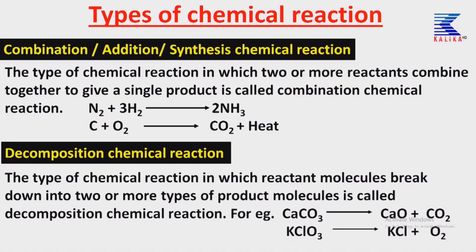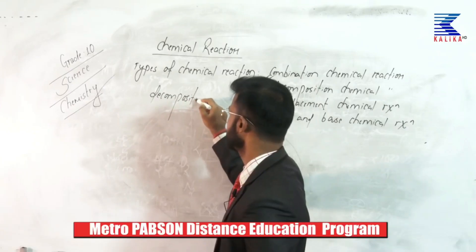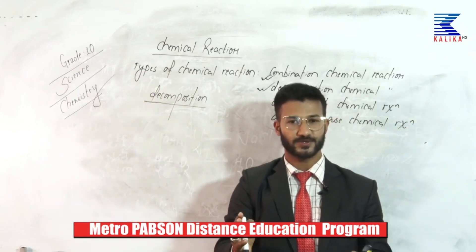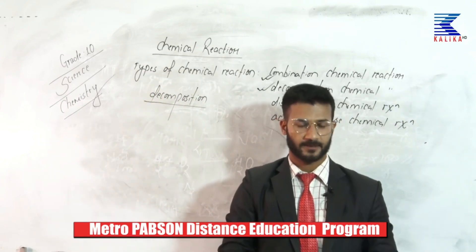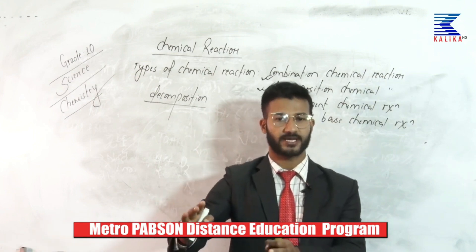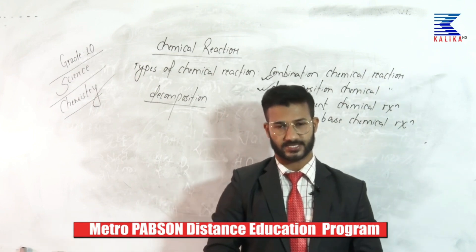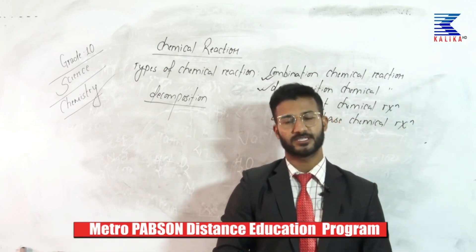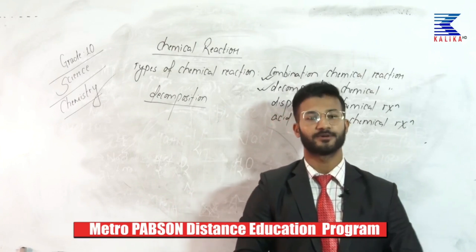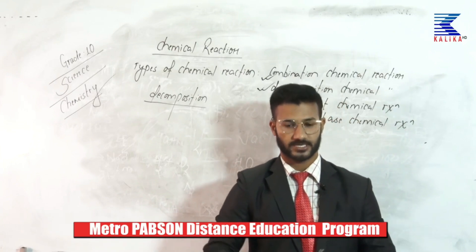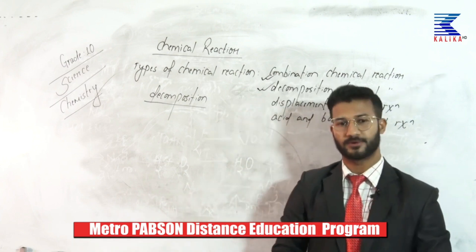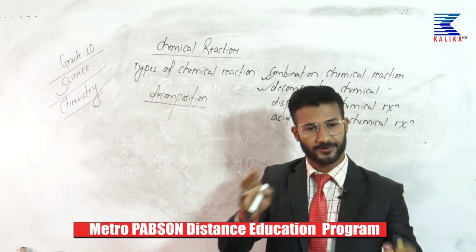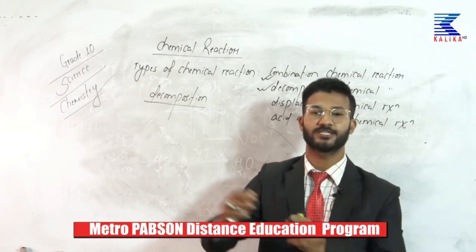Coming to the next type — decomposition chemical reaction. Decomposition simply means breaking down of molecules into its fragments. The products formed have quite different characteristics, meaning we cannot recombine them back to the original reactant molecule if it is irreversible in nature. But the case would be quite different if it is reversible in nature. Decomposition means splitting up of reactant molecules into products.